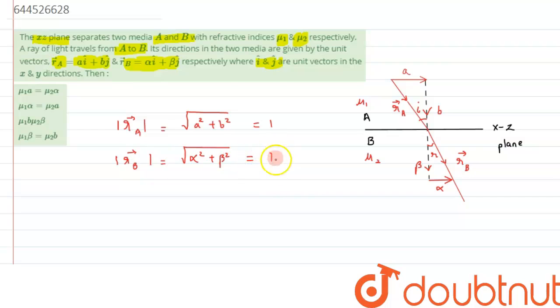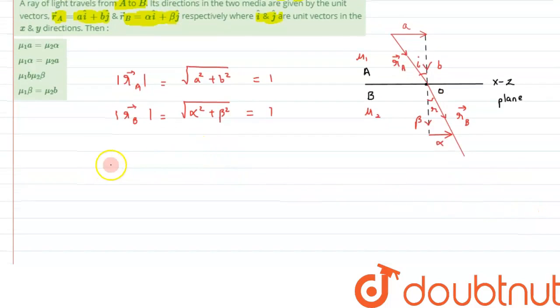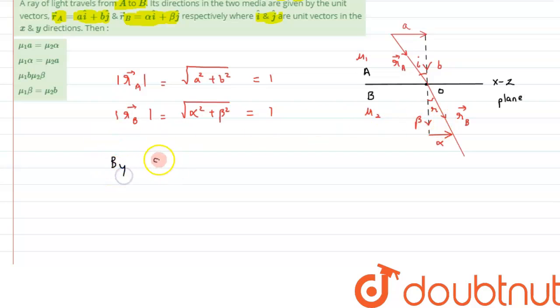So now we can, let's suppose that this point is our O point, so if we apply Snell's law over here, since there is incidence and refraction both are happening, so we can write by Snell's law...